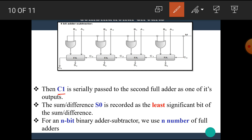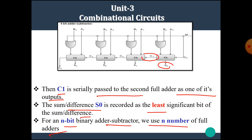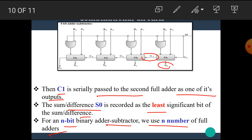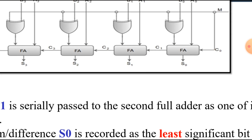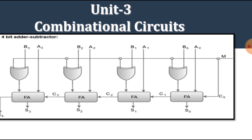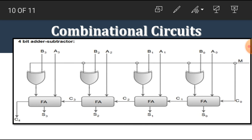C1 is serially passed to the second full adder as one of its inputs. The sum or difference S0 is recorded as the least significant bit of the result. For an N-bit binary adder-subtractor, we use N number of full adders.